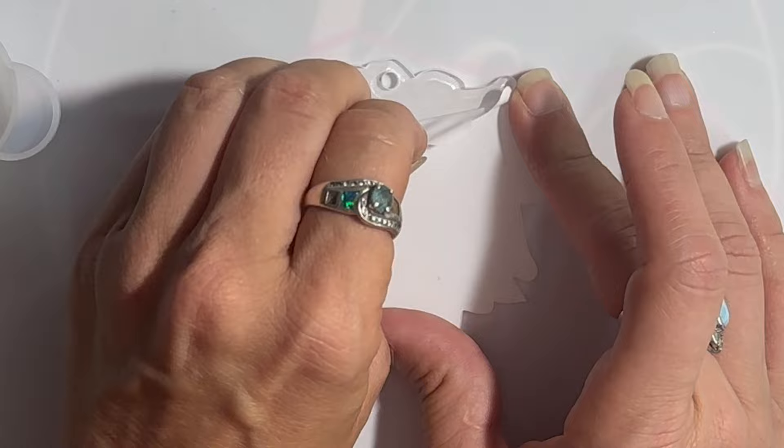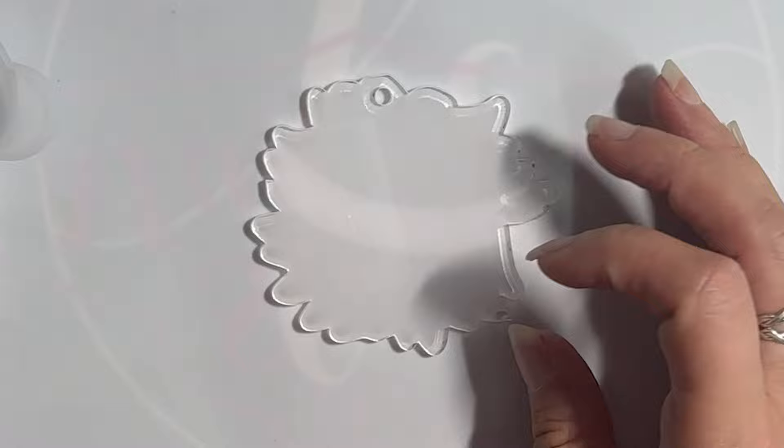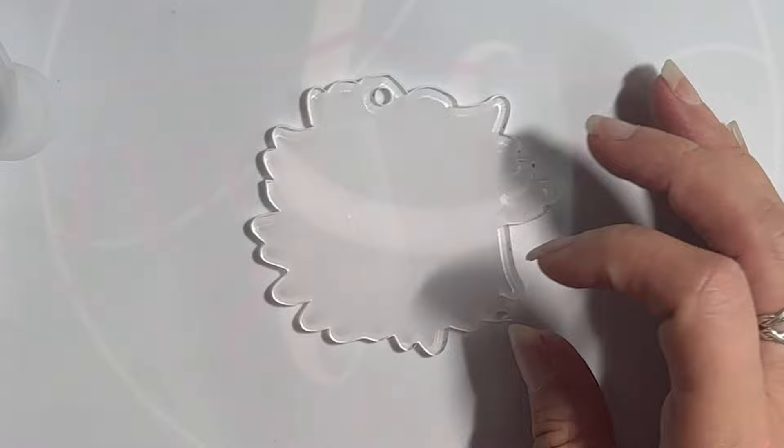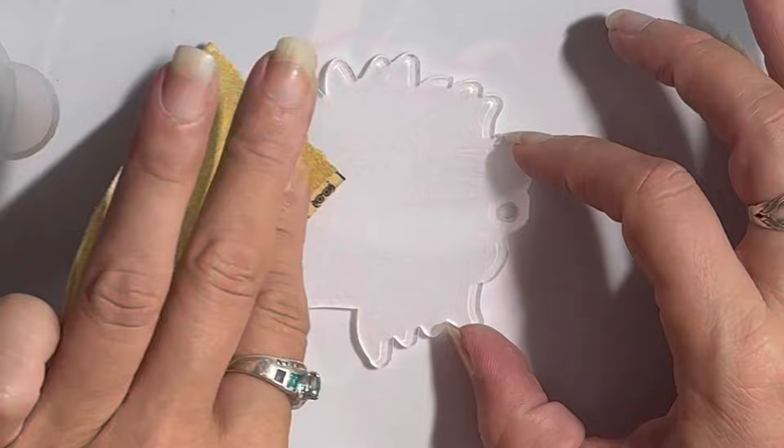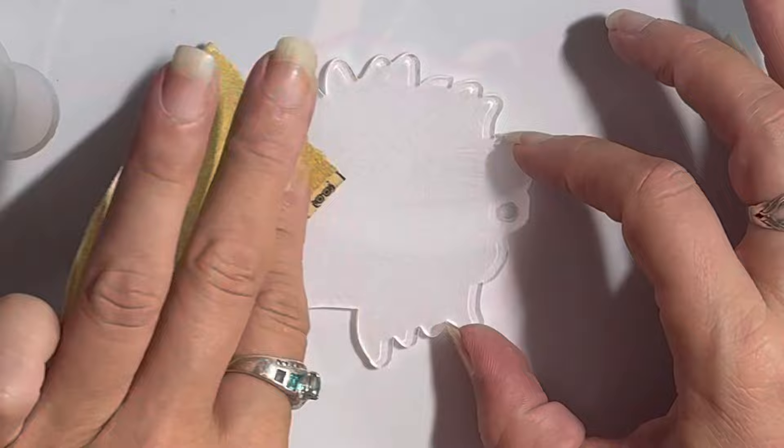She's doing competition cheer. This is an acrylic blank that I got from the vinyl warehouse. I'm going to take my 80-grit sandpaper here and scrape up the surface so that the UV resin has something to adhere to.